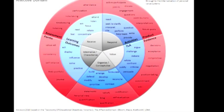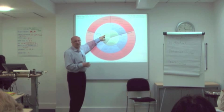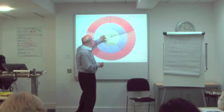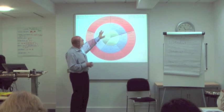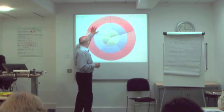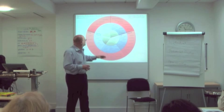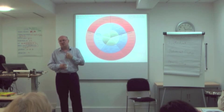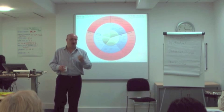The affective domain starts at the same place. At a very basic level, you simply receive instruction or information. To be instructed on timekeeping is a fairly low-level affective skill. But at the ultimate level, you've internalised those values quite deeply — your ability to influence others in your profession as a professional is quite a high-order affective skill.